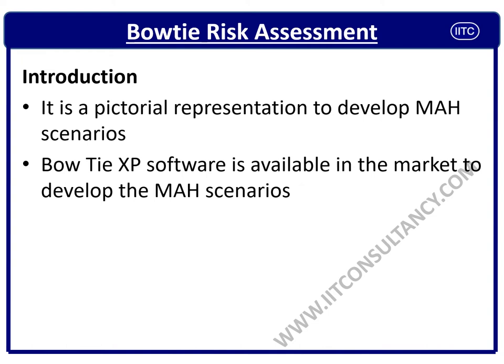As you might understand from the word 'bowtie,' a bowtie is basically a pictorial representation used to develop MAH scenarios. There are many software options available; the famous one is BowTie XP software, which costs around 5,000 to 10,000 US dollars, or can be cheaper if negotiated. If you don't have the software, you can prepare your own Excel sheet — I will provide a download link so you can run bowtie risk analysis easily.